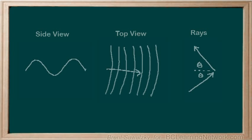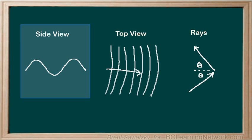Okay, so to summarize, we've considered three ways of representing waves here. The first was a side view, and this is convenient for demonstrating basic wave characteristics, the peaks and the troughs and the wavelength and so on.